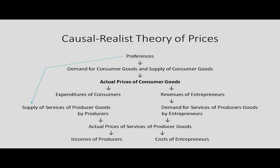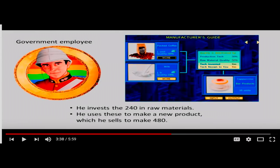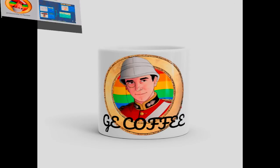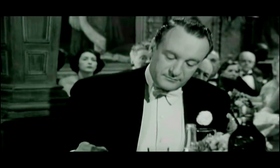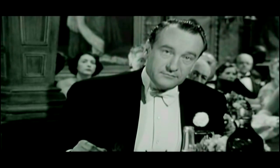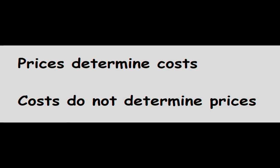If you can remember, in my last video our old friend the government employee opened up his own coffee chain. He's rebranded to call himself GE, or G for short, and you can see the branded GE coffee. In this video, using GE as an example, I'm going to show you how the pricing of coffee happens in practice, and how it is that costs are determined by prices rather than vice versa.